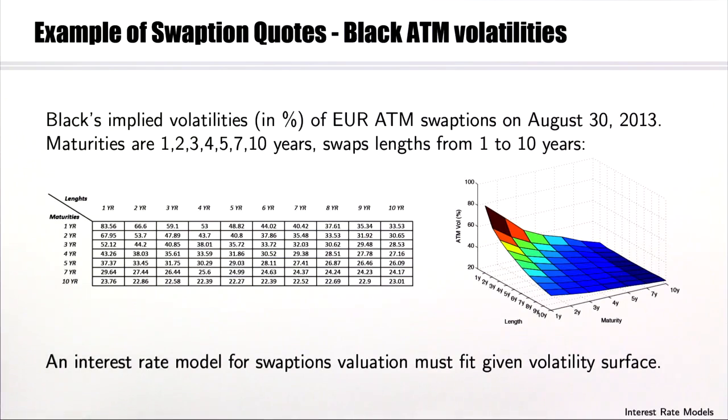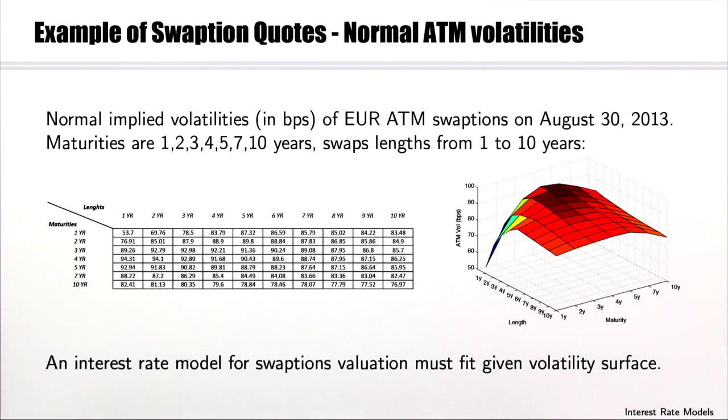The matrix of values is illustrated in the figure on the right-hand side. An interest rate model for swaptions valuation must fit such a given volatility surface. Here are the normal implied volatilities of the same at-the-money swaptions in the eurozone in August 2013.